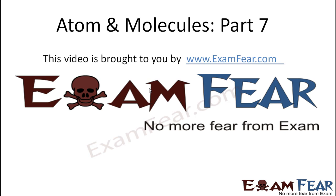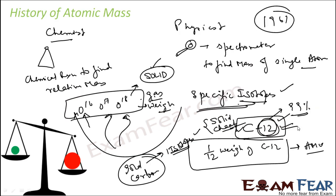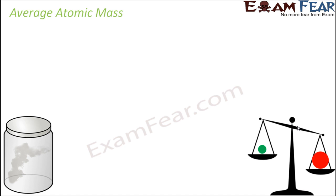Hello friends, this video on atoms and molecules part 7 is brought to you by ExamFear.com. This covers the history of atomic mass for a given atom. Now let's see average atomic mass. What is average atomic mass? We have so many isotopes of oxygen, for example oxygen-16.